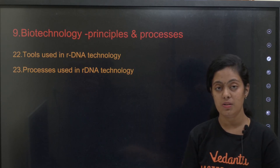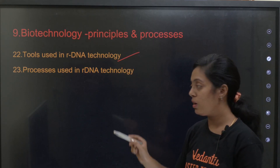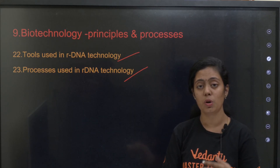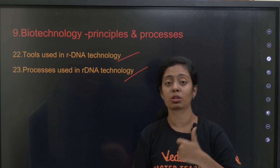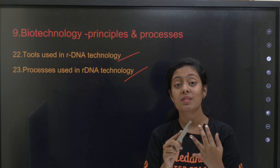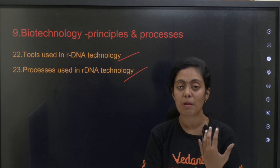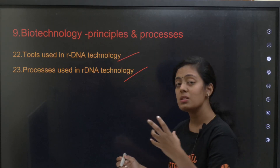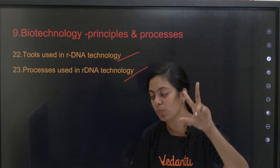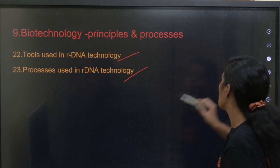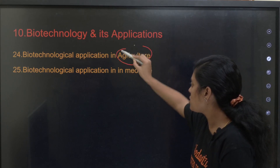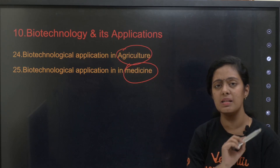Next is biotechnology principles and processes. You have tools used in recombinant DNA technology and processes used in recombinant DNA technology. For tools, you need to discuss vectors, properties of cloning vectors like pBR322, selectable markers, and screenable markers. For processes, you need to study agarose gel electrophoresis, PCR, and fermentation.